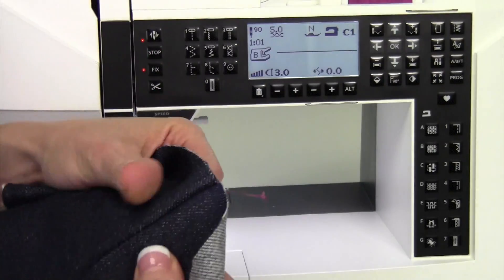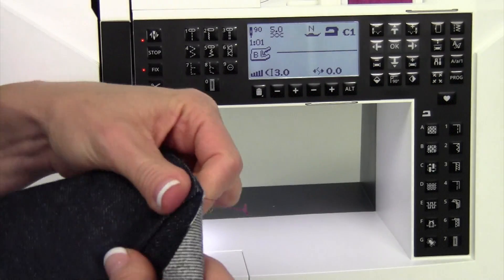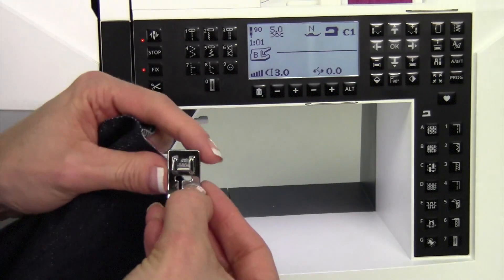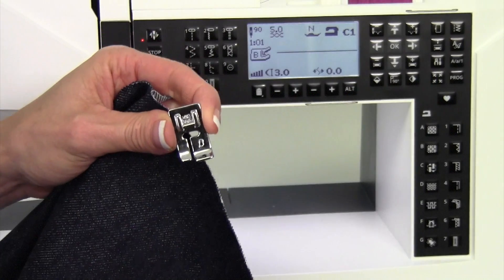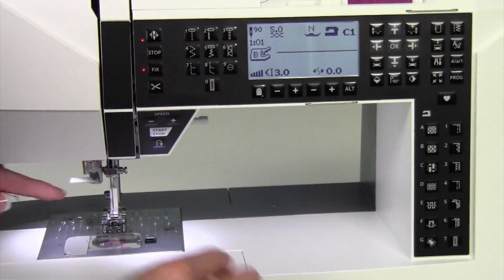Now before we actually get to the seam, I'm going to show you a quick little cheat. So you have in your collection a blind hem foot, that is foot letter D as in dog, and I'm going to show you how you can cheat with this.